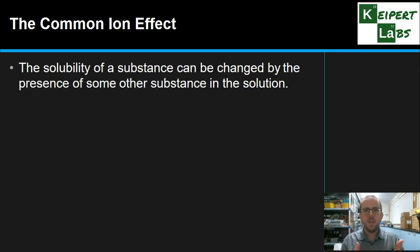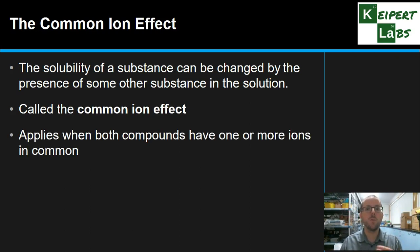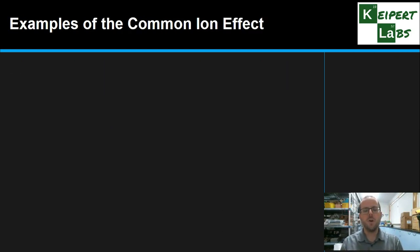And so the solubility of any substance can be changed by the presence of some other substance in the solution. Now, we're not just saying random substance A is affected by random substance B, but rather we're thinking about what we call the common ion effect when both compounds have one or more ions in common. So you're trying to dissolve barium sulfate in a sodium sulfate solution. So the sulfate ion is in common between these two compounds. Trying to dissolve lead chloride in a sodium chloride solution, for example, or trying to dissolve sodium chloride in a sodium sulfate solution. And so we call this phenomenon the common ion effect.